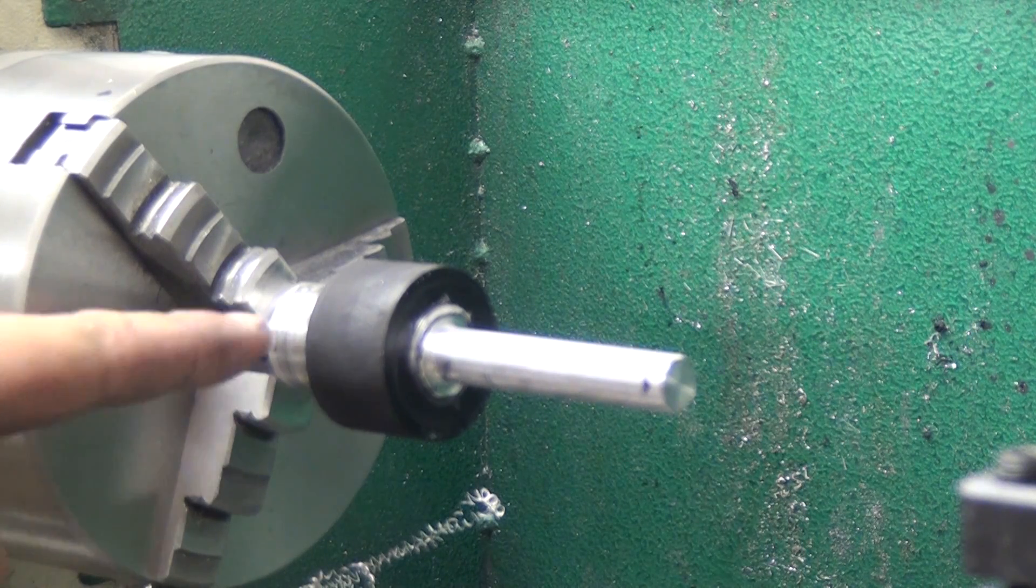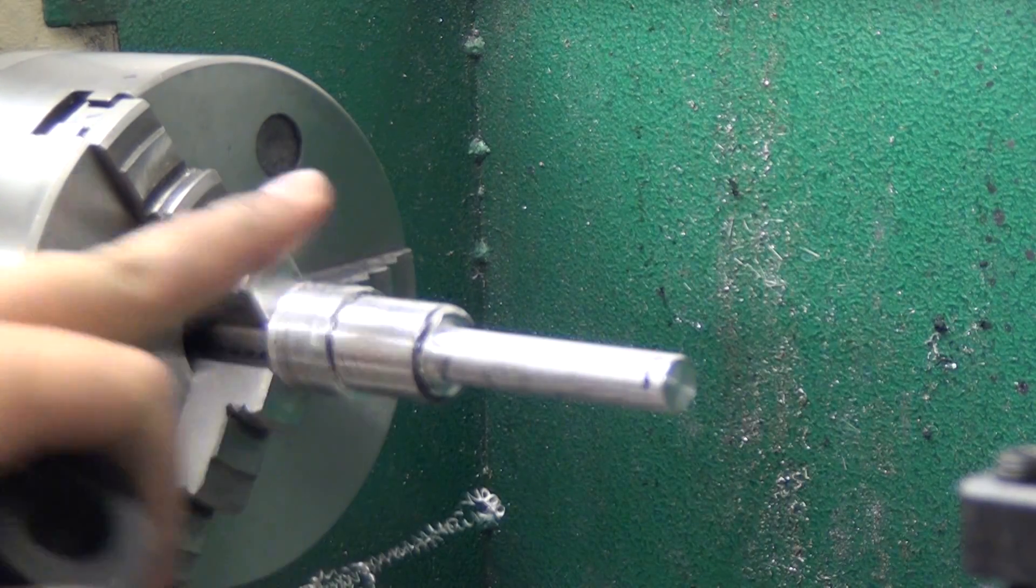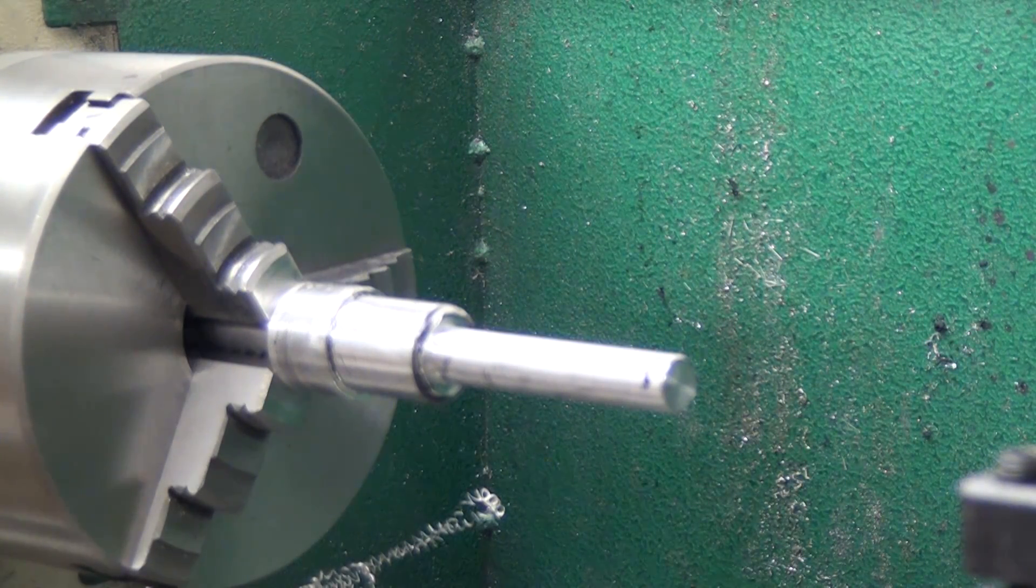So what I've done is I've turned down this old piece of aluminum from some other project to the same diameter, actually a little bit bigger than what the splined spindle is on the G0704.